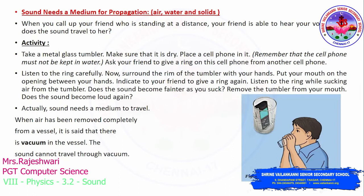We are going to perform certain experiments to understand how sound travels through these mediums. To understand how sound travels through air, take a metal glass tumbler and make sure that the tumbler is dry. Place a cell phone in it and ask your friend to give a call to that phone using another cell phone.